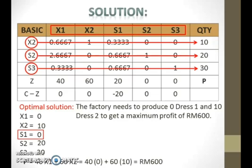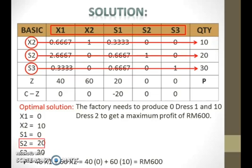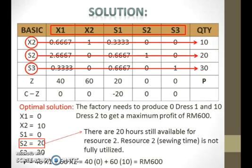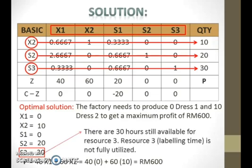S1 represents resource 1, which is cutting time. S1 equals 0 indicates that there is no amount left for resource 1, meaning that resource 1 is fully utilized. S2 represents resource 2, which is sewing time. S2 equals 20 indicates that there are 20 hours still available for resource 2, meaning resource 2 is not fully utilized. S3 represents resource 3, which is labelling time. S3 equals 30 indicates that there are 30 hours still available for resource 3, meaning resource 3 is not fully utilized.